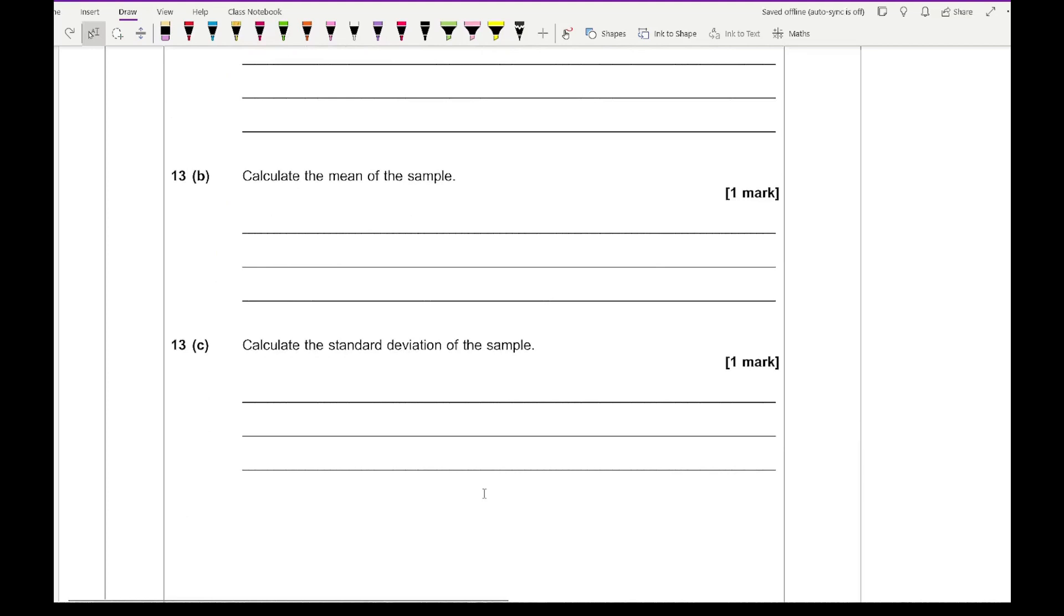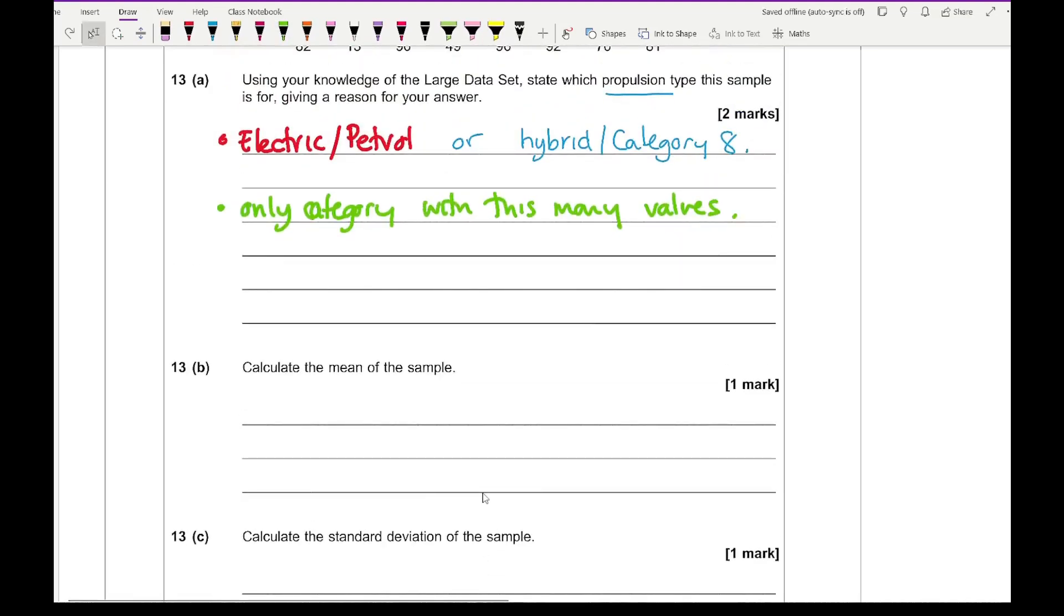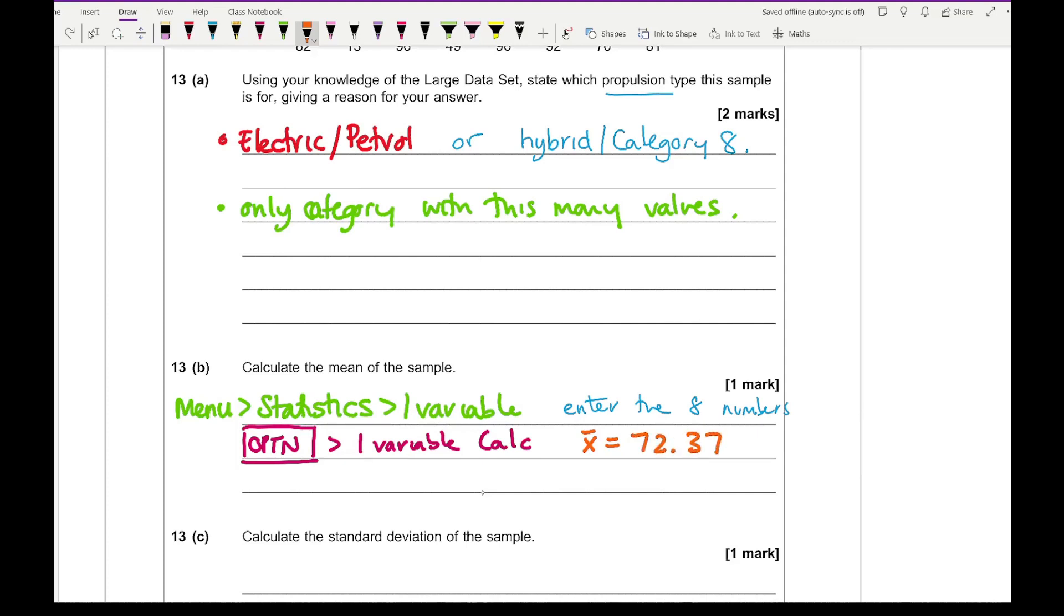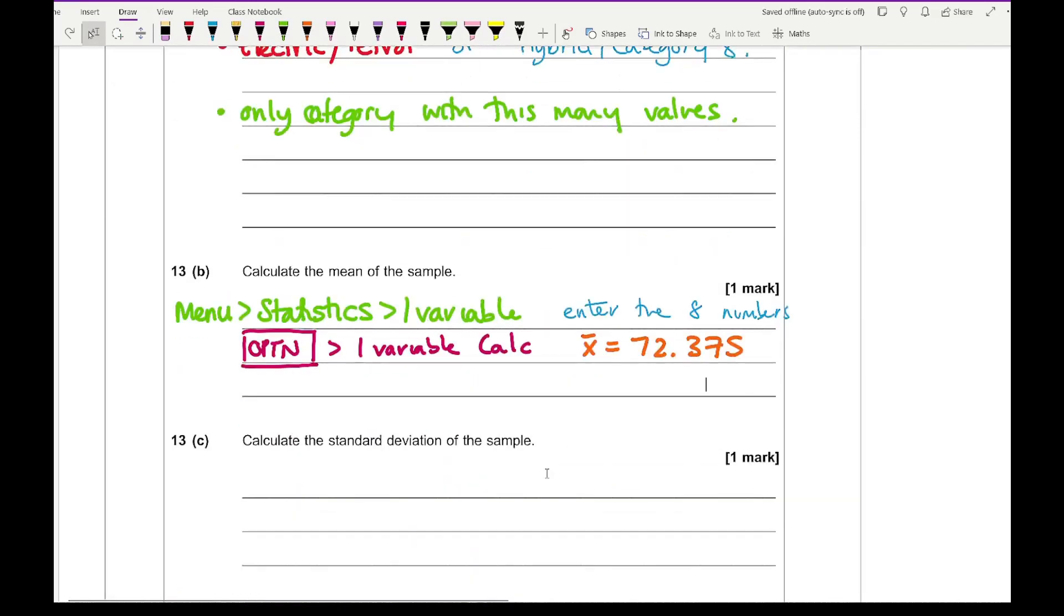For question 13b it says calculate the mean of the sample. For this, all you need to do is use your calculator. Hopefully you've got a Casio FX-991EX calculator or the CG50. The general steps are: go to menu statistics, then type in one variable, and then enter the eight numbers. Once you've done that, press the option button on the calculator and then select one variable calculation. For the mean what you're wanting is X bar, and if you look that value up you should get a value of 72.375. Alternatively, you could just simply add all those numbers up and divide by how many numbers you've got and you should get the same answer.